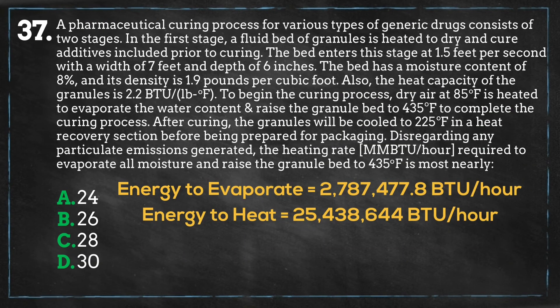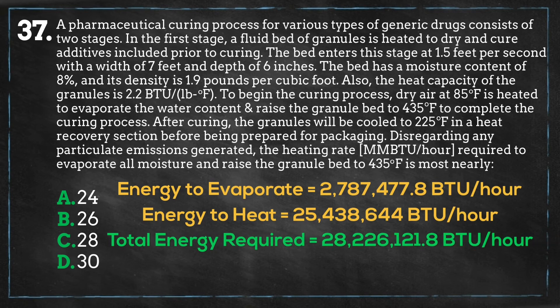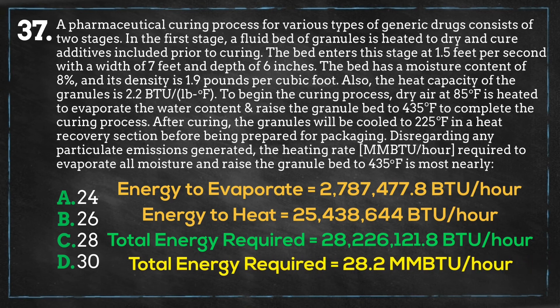We add the energy required to heat the bed to the energy required to dry the bed and we get 28,226,000 BTU per hour. The question asks for the answer in millions of BTU per hour, so we divide by 1,000,000 and we get 28.2 million BTU per hour as our answer, which is closest to C.